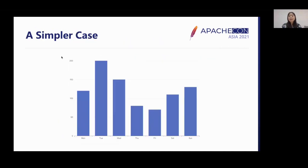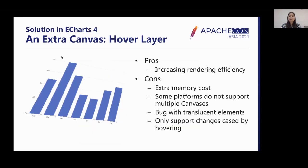Is it possible to only render the changed elements in the canvas? In this simple case, yes, and this method is called HoveringLayer, supported in eCharts4. The basic idea of a hover layer is to use an extra canvas on top of the main canvas to render the elements modified by mouse hovering. Since we do not need to re-render all elements in the chart, this solution can improve rendering efficiency a lot.